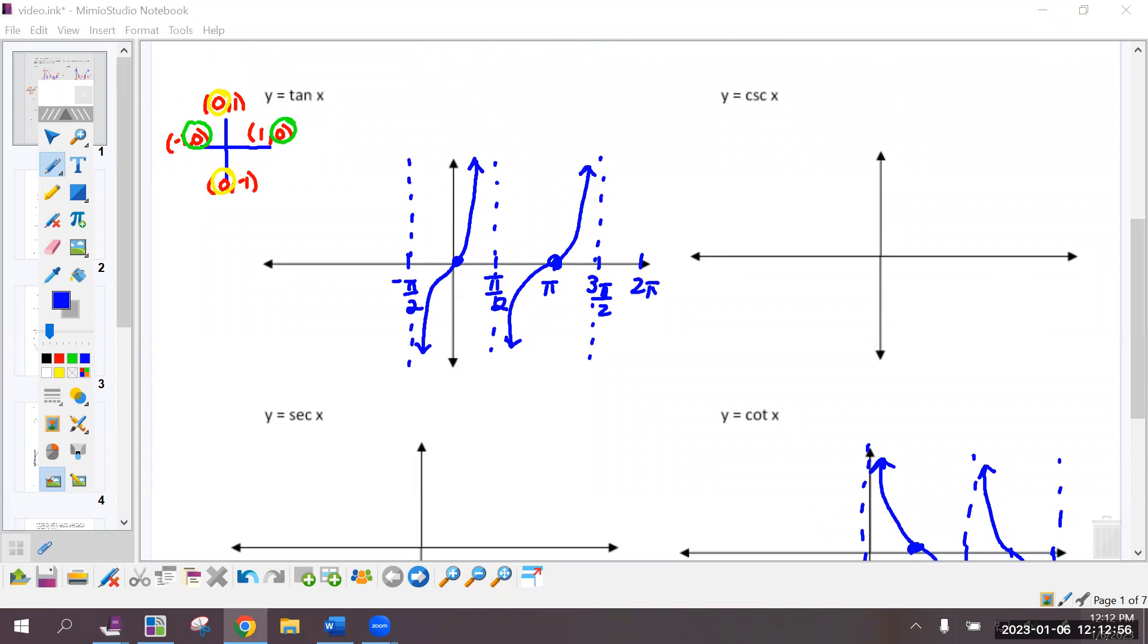Cosecant, I'm going to build that graph off of its reciprocal, which is sine. So let's put my quadrantals again. So the sine graph looks like this. Anywhere that sine is an x-intercept or 0, cosecant is going to have an asymptote. And then this maximum point, we're going to flip that out. The minimum point, we're going to flip that down towards the asymptote.